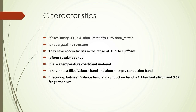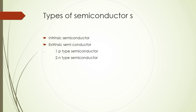Welcoming to the types of semiconductors. There are two types: one is intrinsic semiconductor and another is extrinsic semiconductor. In extrinsic semiconductors, there are two further types: one is p-type semiconductor and another is n-type semiconductor.